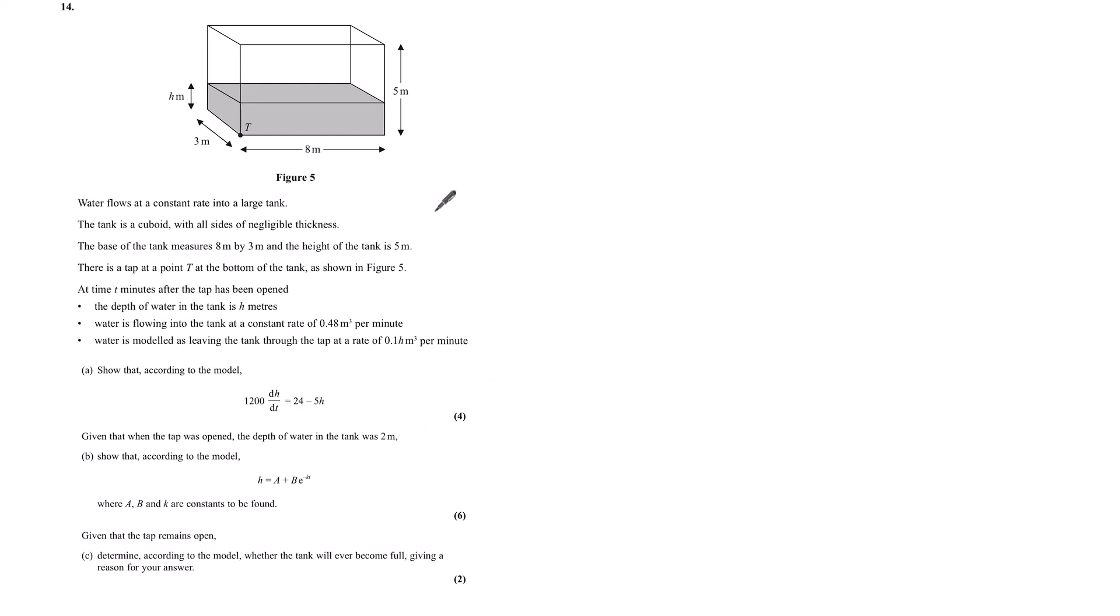A lot of information. We're going to start looking at this bit that we're given. We've got dh by dt and with these modeling questions with differential equations, we're quite often looking at some involvement of the chain rule. I'm firstly going to consider how dh by dt could possibly be represented. dh by dt is going to be the rate of change of this height over time.